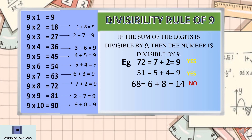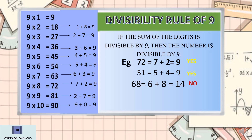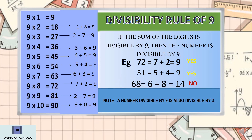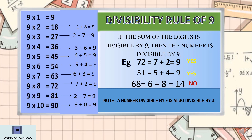I think you have understood the divisibility rule of 2, 3, 5, 9, and 10. If you have any doubt, please comment. There is also a note: a number divisible by 9 is also divisible by 3. So if the number is divisible by 9, then it will also be divisible by 3.